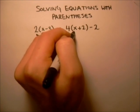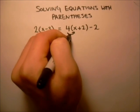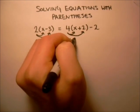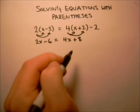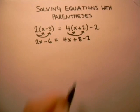Here, we'll multiply 4 times x, and then we'll multiply 4 times 2, so we get a plus 8, and we still have this minus 2 out here.